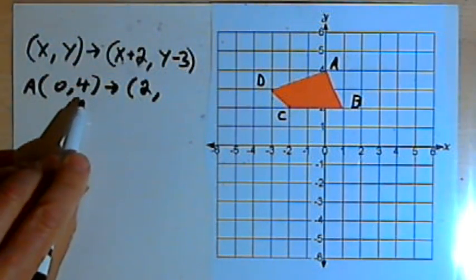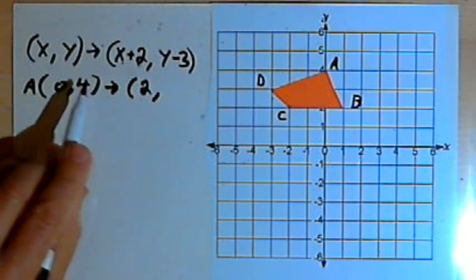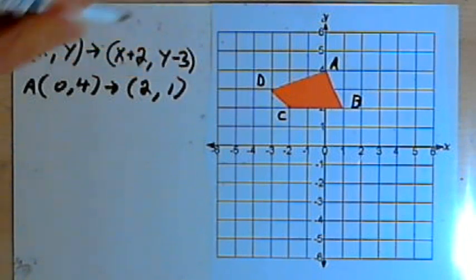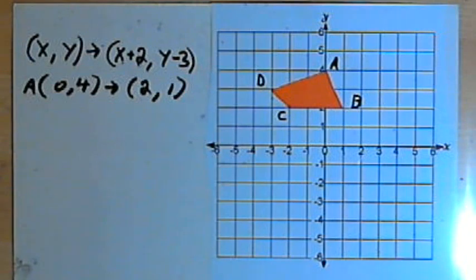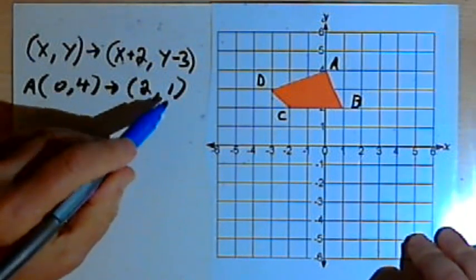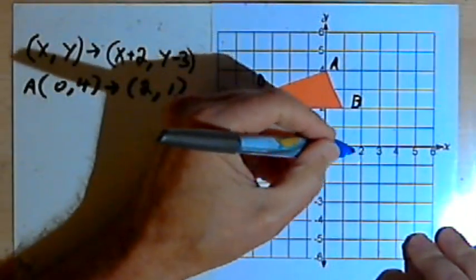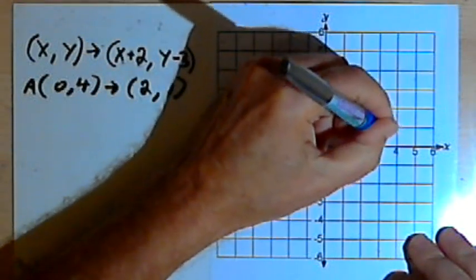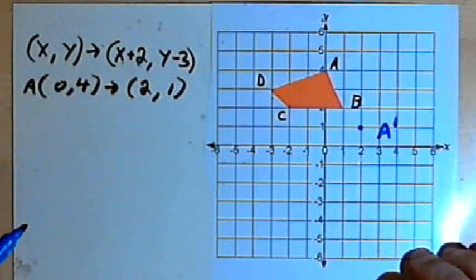Then I'll take the y-coordinate, 4, and the instructions say to subtract 3 from it. So that's going to be 1. This tells me that my new point, A prime, is going to be at (2, 1). So let's find that point. There's 2 and here's 1 on the y-axis. So A prime is here at (2, 1).